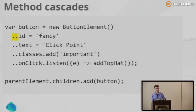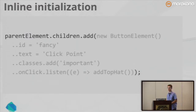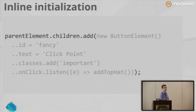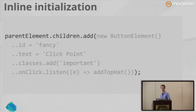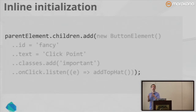We can do even better — we can eliminate the need to create a separate variable thanks to cascades. Even though we need to create a new object and then initialize it, we can do this all inline. You can say new ButtonElement dot-dot ID equals foo right where you want to use the object from the expression new ButtonElement. This is great when you need to create a new object, initialize it with a few values, and then pass it to some function.